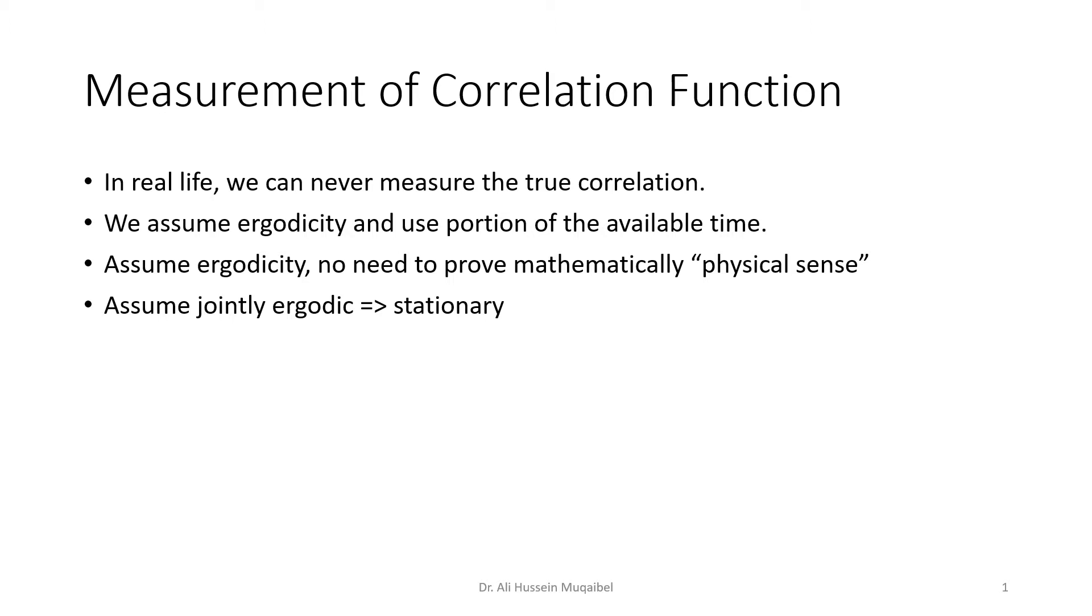Now, if you want to do cross-correlation, we're going to assume that, if we want to measure cross-correlation, we'll assume that we have joint ergodic processes. And of course, this assumption of being joint ergodic guarantees that this process is going to be stationary.